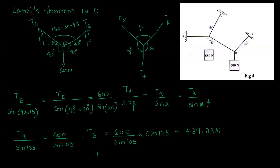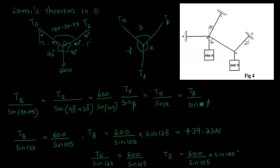Te divided by sin 120 equals 600 divided by sin 105. Then Te will be equal to 600 divided by sin 105, multiplied by sin 120. That is equal to 537.94 Newton.